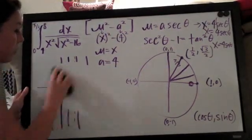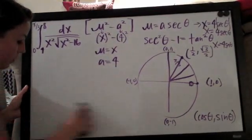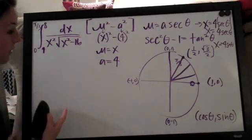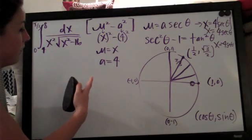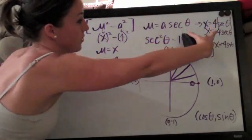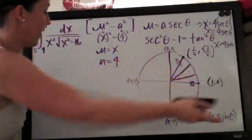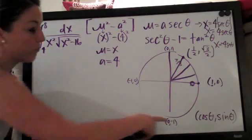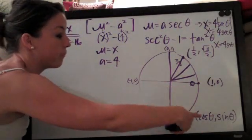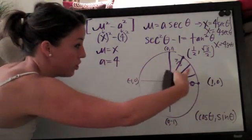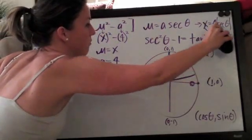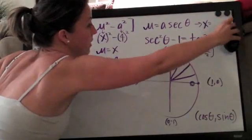So again, just to recap really quickly, the way that you check, you convert the range four to eight in our case by setting each one of these, four and eight, equal to your original x, which is just four secant theta, and then simplifying, converting the secant to cosine, one over cosine, solving for cosine and then using these unit circle values to convert that range.